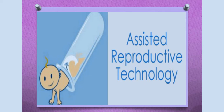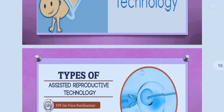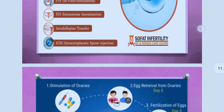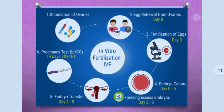The various types of assisted reproductive technologies include IVF (in-vitro fertilization), IUI (intrauterine insemination), intrafallopian transfer, ICSI (intracytoplasmic sperm injection), GIFT (gamete intrafallopian transfer), and ZIFT (zygote intrafallopian transfer). The first technique is in-vitro fertilization, or IVF in short.